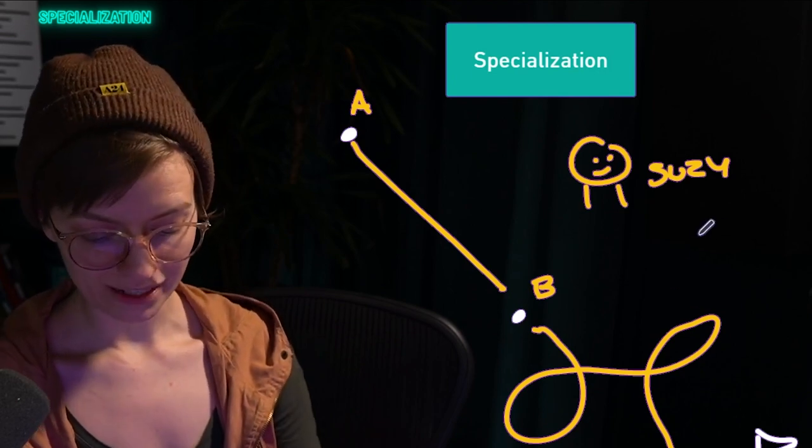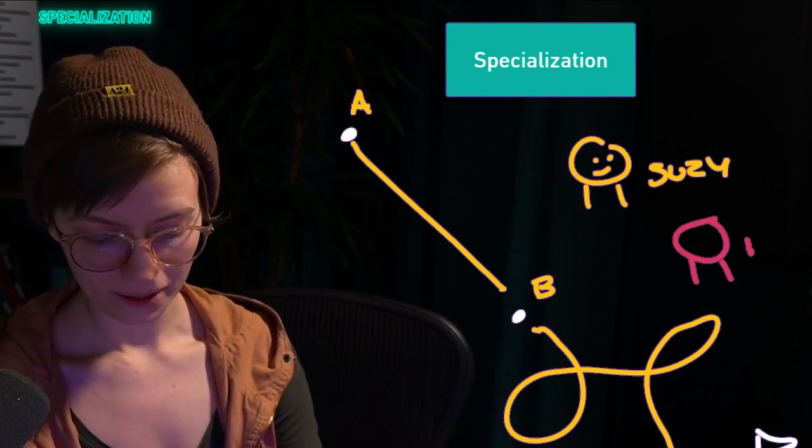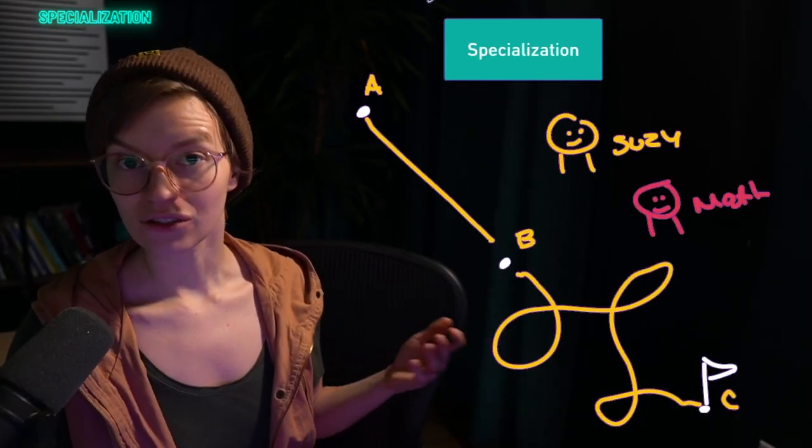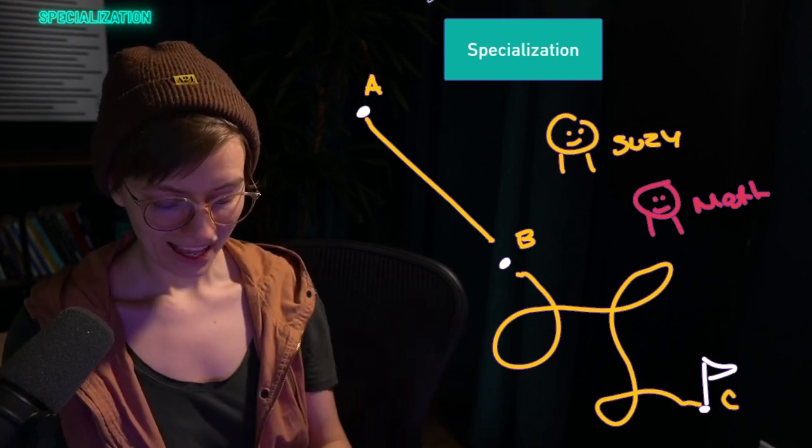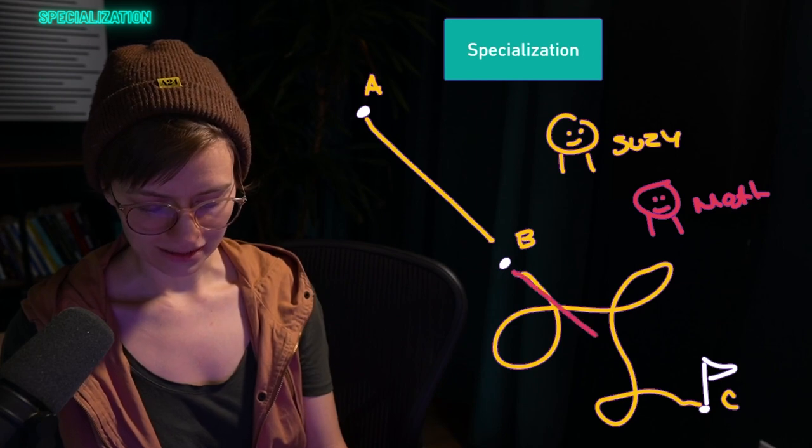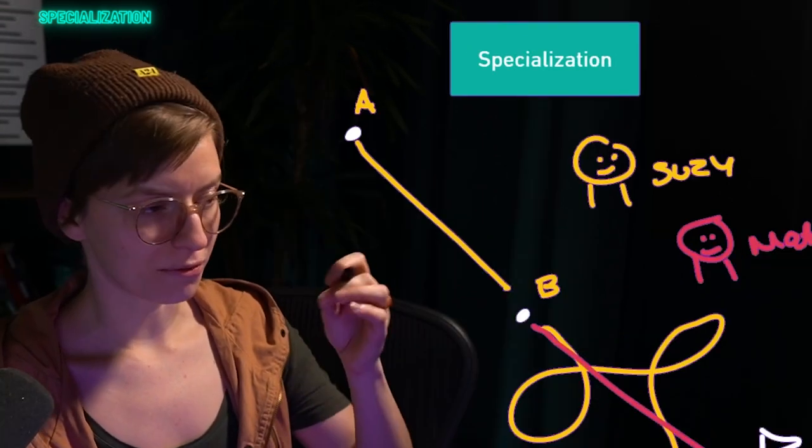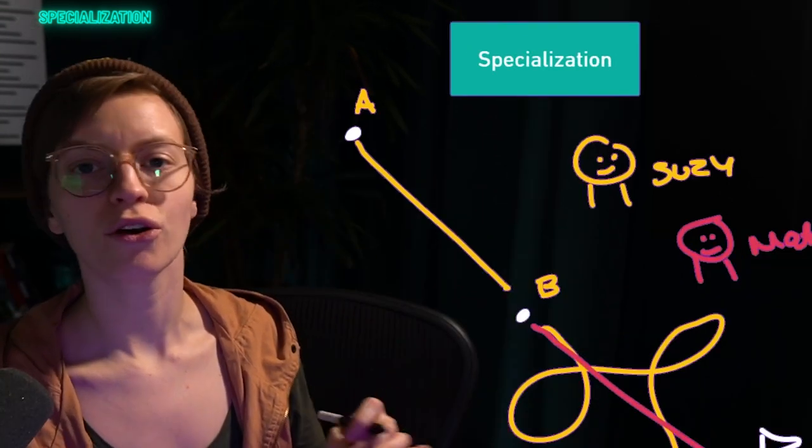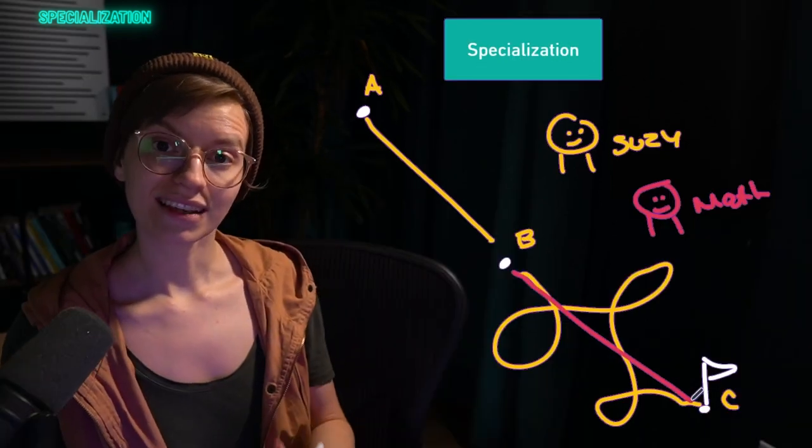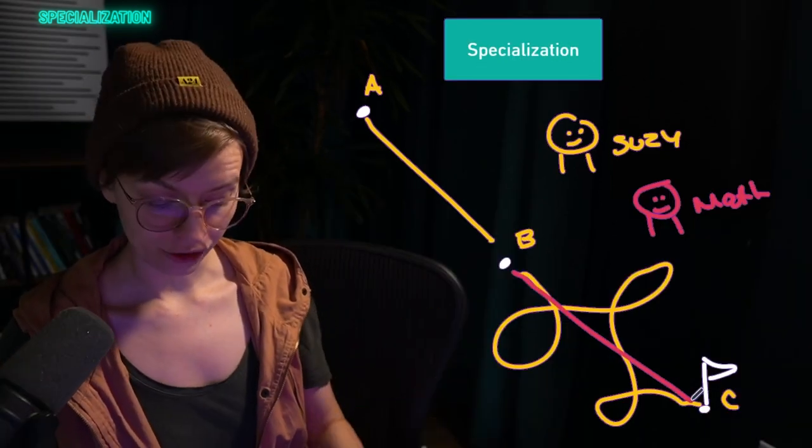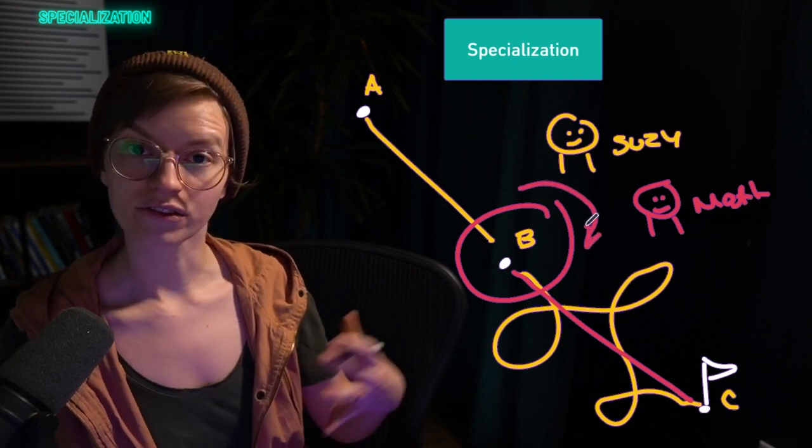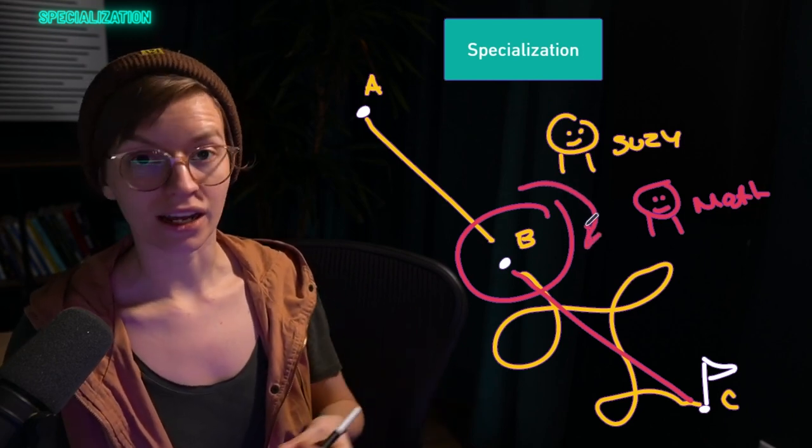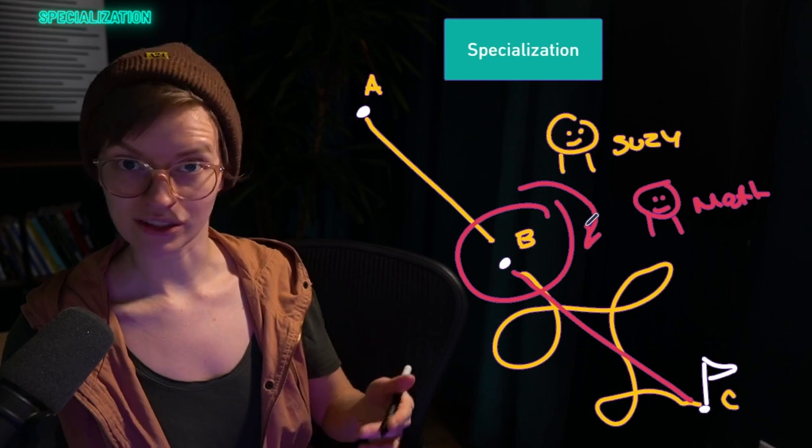To solve this, we might introduce a second person into the process called Matt. Matt is someone who has different strengths than Susie because we want to hire chess pieces and not checkers on our team. And Matt is really good at getting from B to C. Given the task, Matt can get us from B to C super swiftly with no issues or errors. In this case, it might actually be more efficient for us to have a baton pass at point B where Susie hands it off to Matt to get a faster and higher quality result than if Susie just did everything herself.